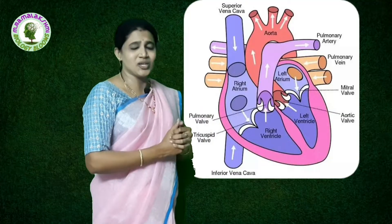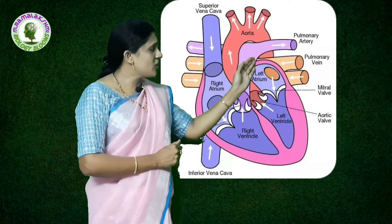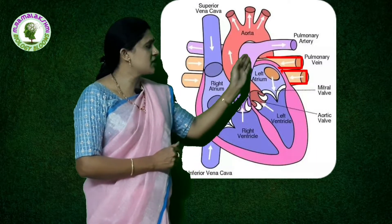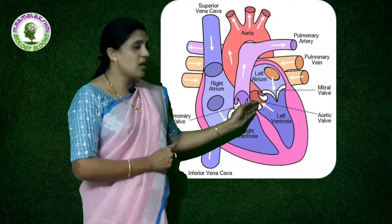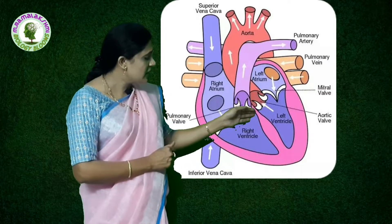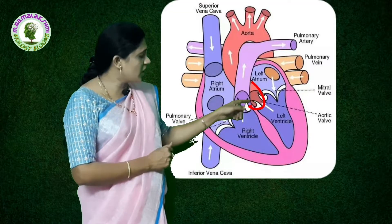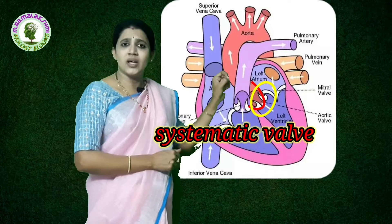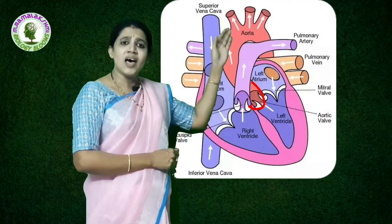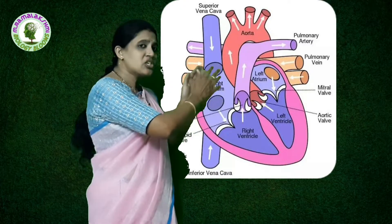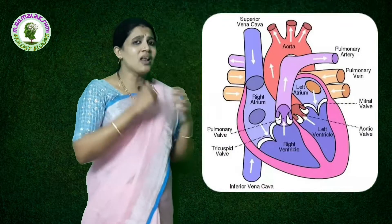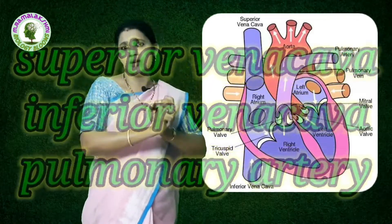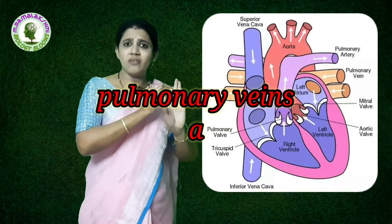On the left side, the left auricle is connected with the pulmonary veins, which bring blood from both lungs. The left ventricle is connected to the aorta, guarded by a semilunar valve. The aorta is the largest artery in the body and takes oxygenated blood from the heart. So on the left side we have the pulmonary veins and the aorta.